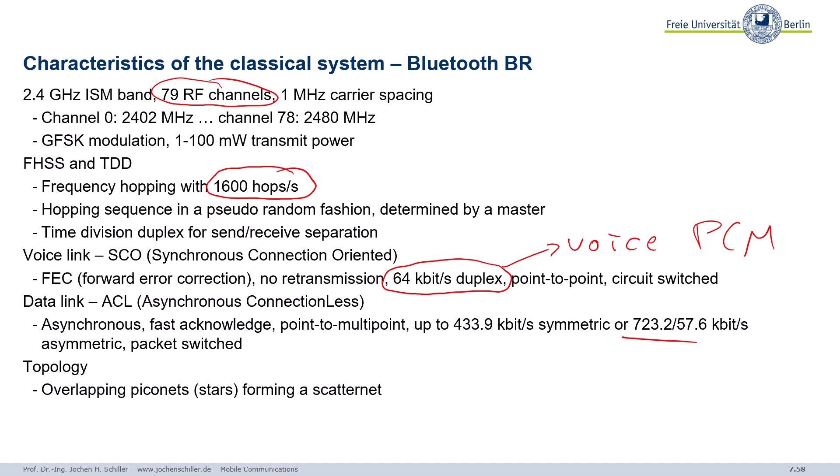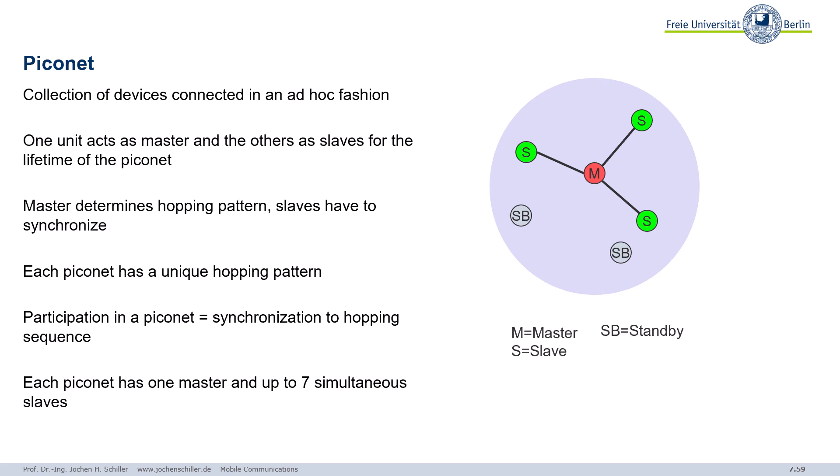Also quite different from wireless LANs is the topology. The term we use is Piconet. Piconets are stars that may overlap, and many Piconets can form a so-called scatter net. A Piconet is basically a collection of devices connected in an ad hoc fashion. We have one unit acting as a master — this can be any device, your laptop, your mobile phone — and all the others are slaves for as long as the Piconet lives.